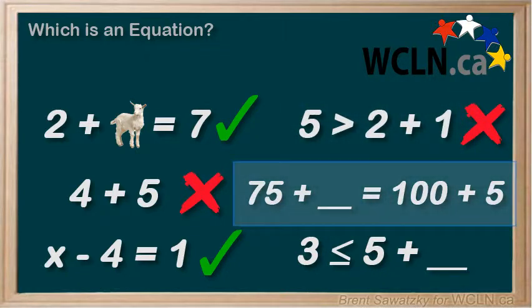75 plus blank equals 100 plus 5. It looks like a bit of a confusing one. The blank must be the unknown. It definitely has an equal sign, so it must be an equation.